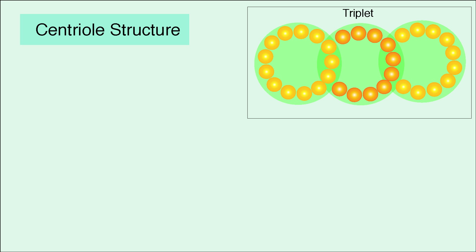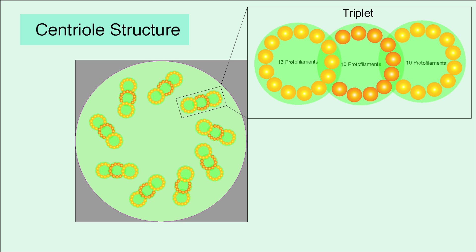The centrioles themselves are composed primarily of microtubules arranged in a specific pattern. In this case, three microtubules come together to form a triplet. Each triplet contains one microtubule with 13 protofilaments and two microtubules with 10 protofilaments. Nine of these triplets come together to form a hollow ring.